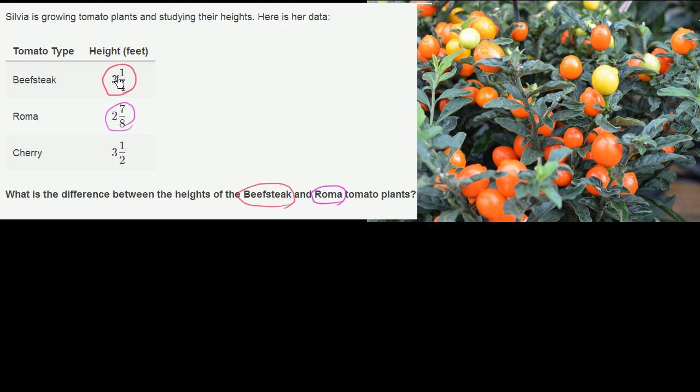So we want to find the difference in these two heights. So we want to subtract the smaller of these from the larger of these. So we're really trying to evaluate what 3 1/4 minus 2 7/8 is.